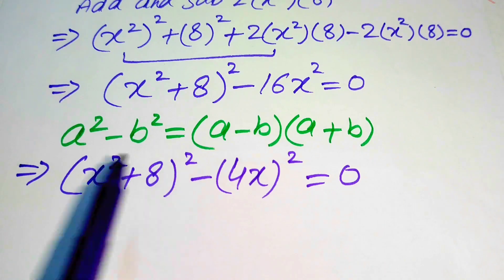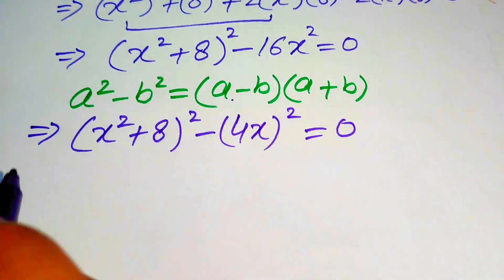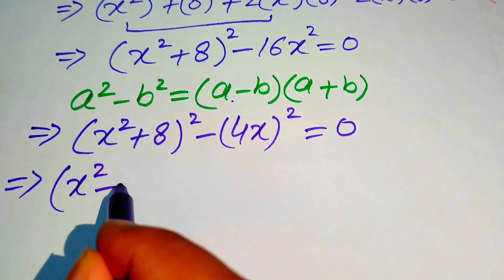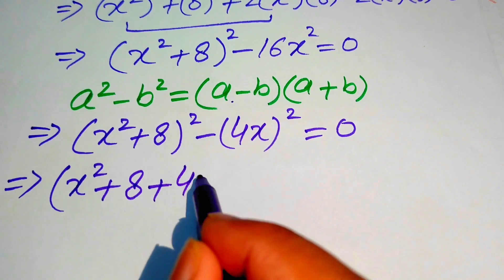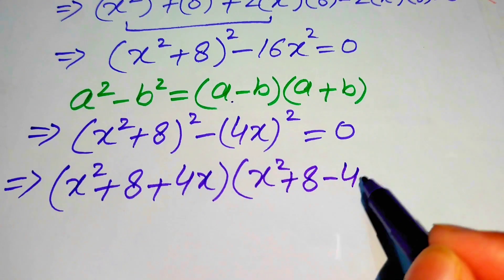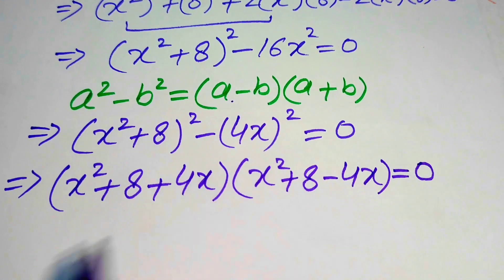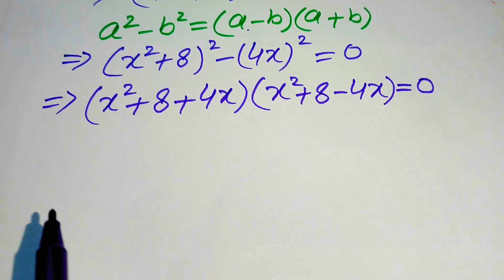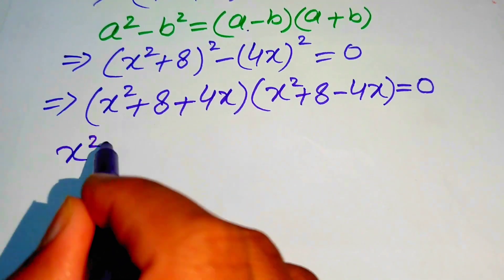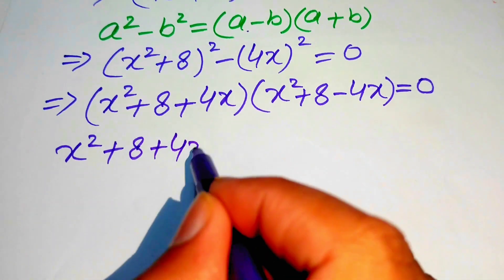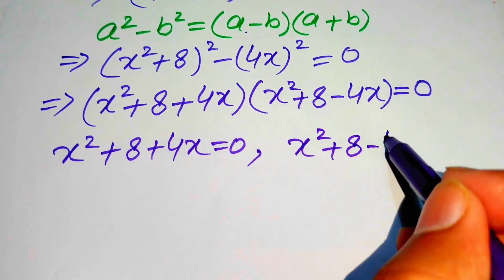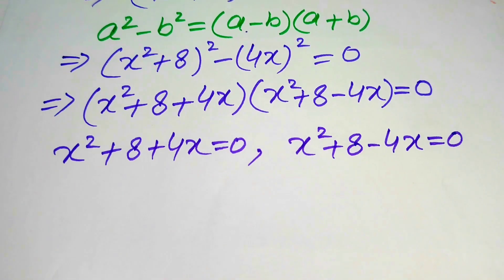We rewrite the equation as x squared plus 8 whole squared minus 4x whole squared equals 0. Applying the difference-of-squares formula, where a is x squared plus 8 and b is 4x, we get x squared plus 8 plus 4x times x squared plus 8 minus 4x equals 0. We divide this into two cases: case one is x squared plus 8 plus 4x equals 0, and case two is x squared plus 8 minus 4x equals 0.